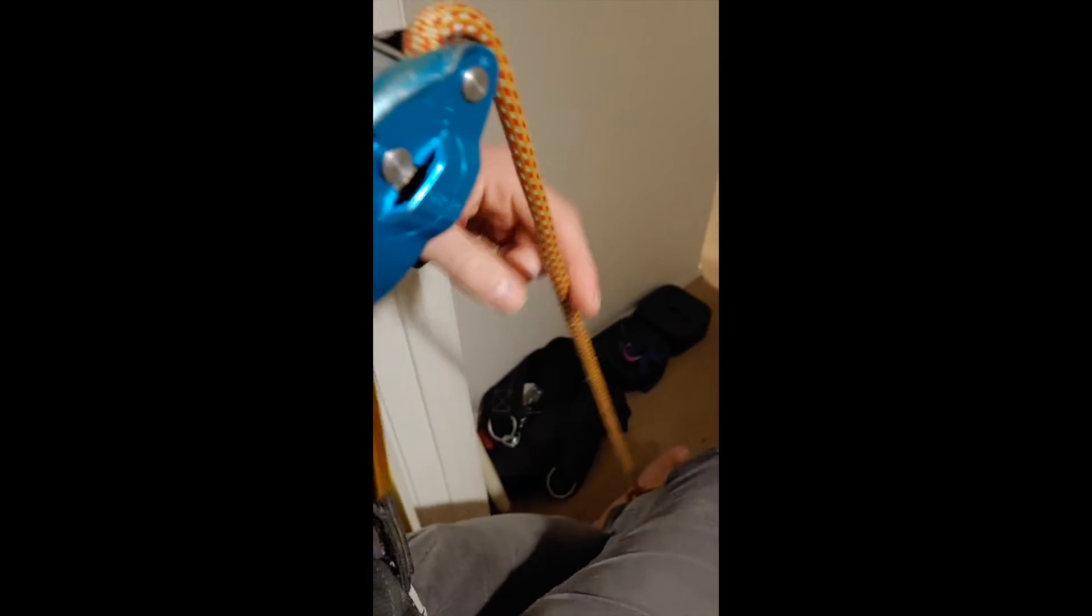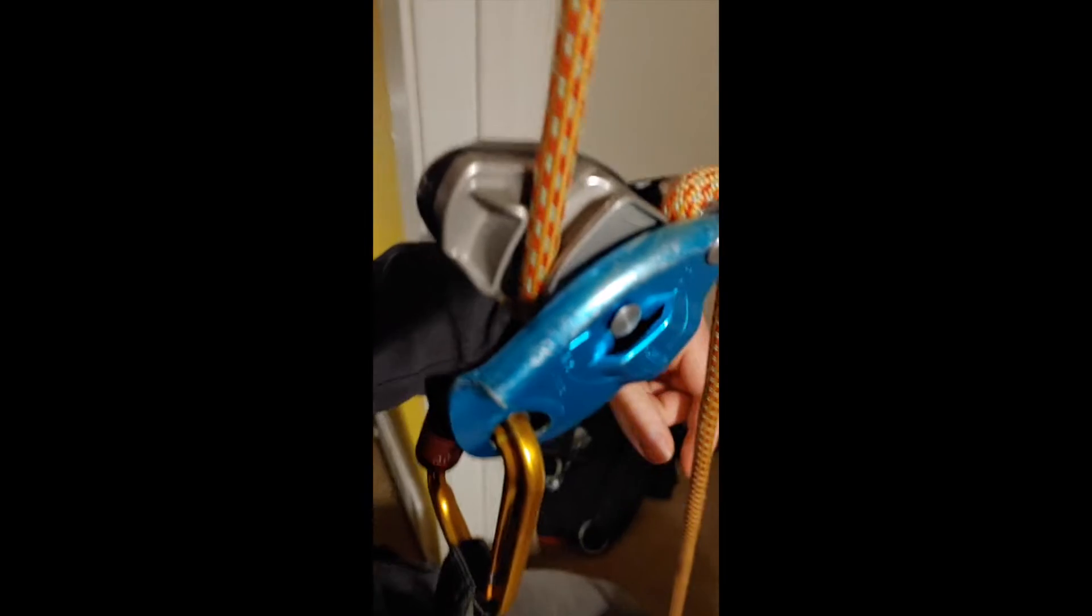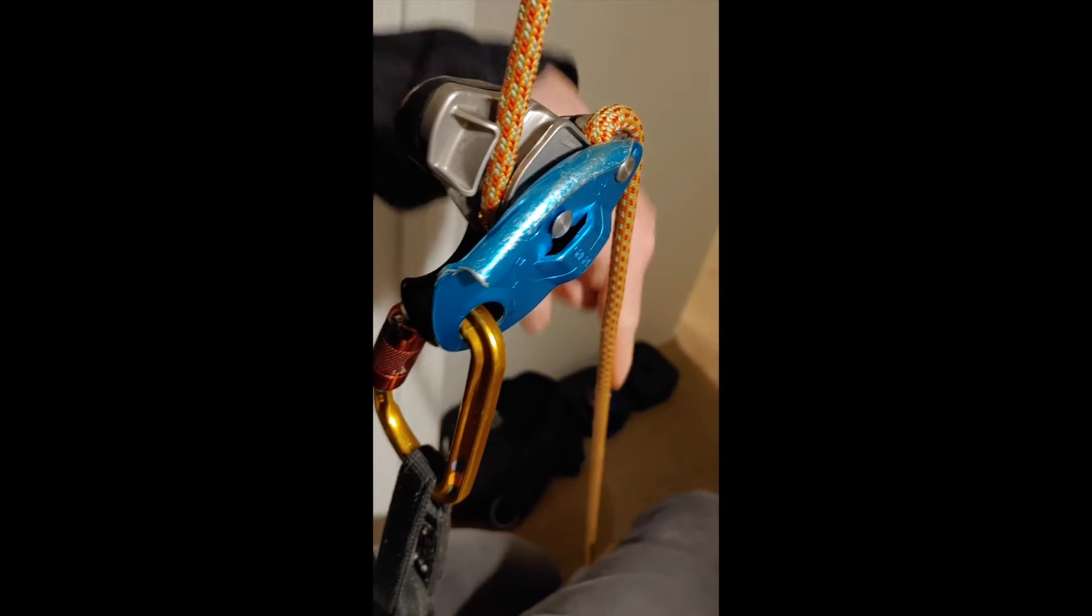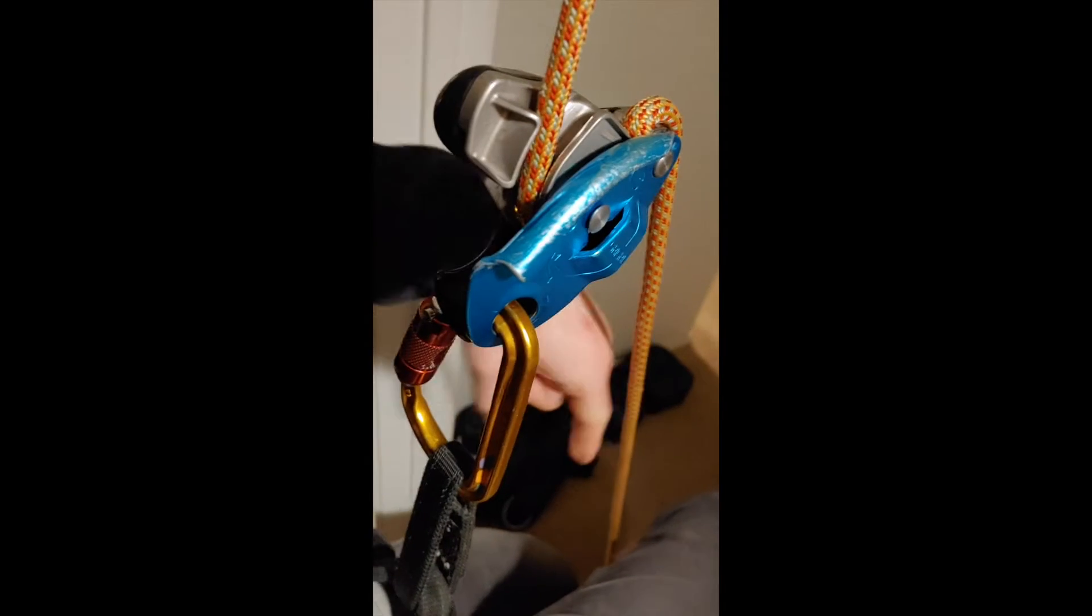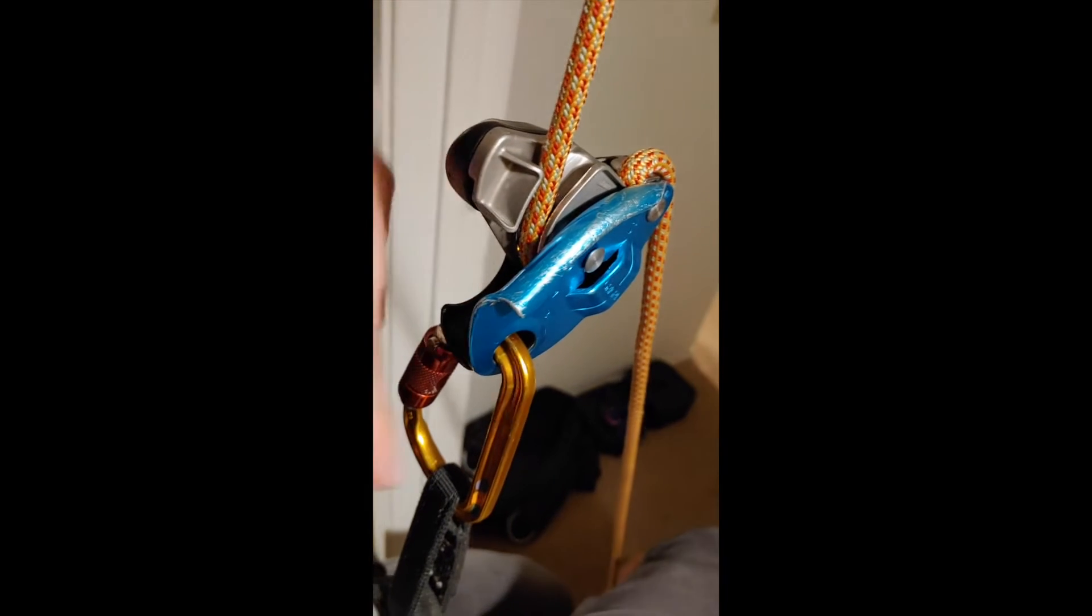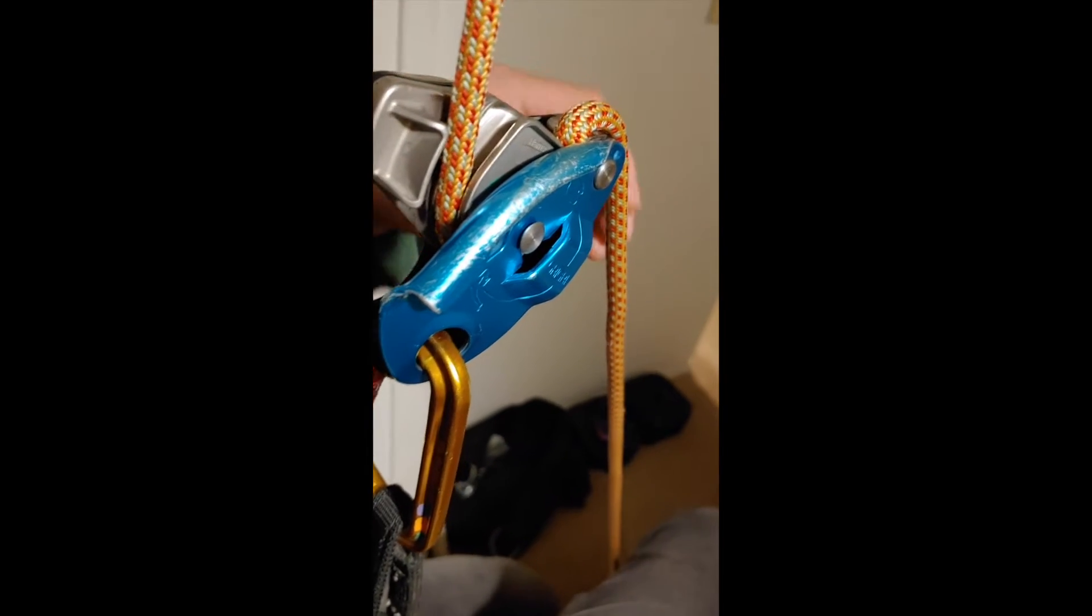So I can't put more than my body weight on this because it's just my foot through it. So essentially, as I push down on the brake strand, I'm going to stand up slightly to take a little bit of weight off the Grigri and then you can see the failure mode.